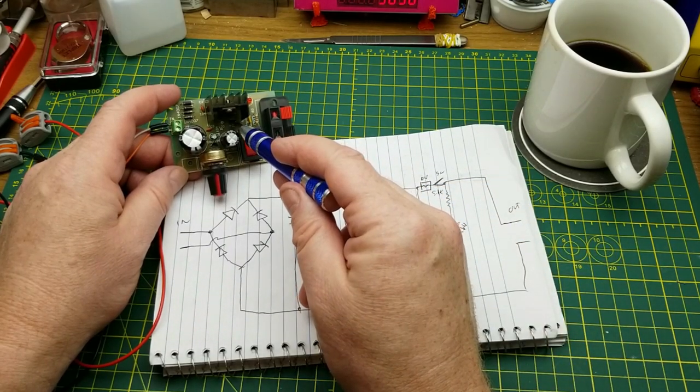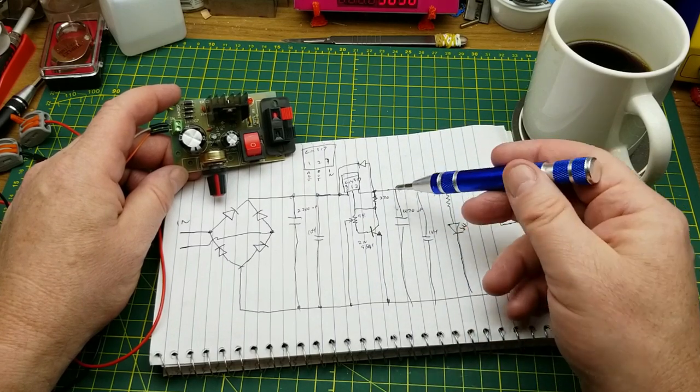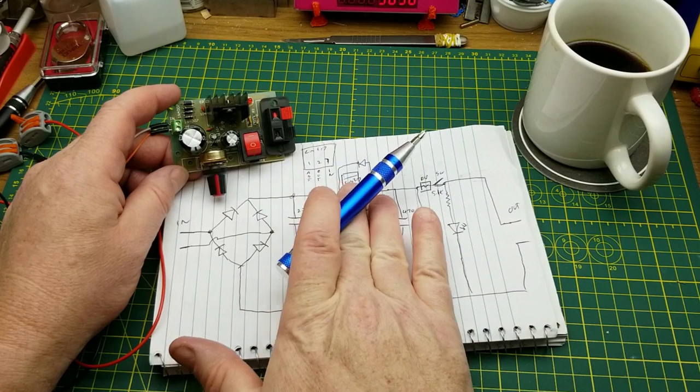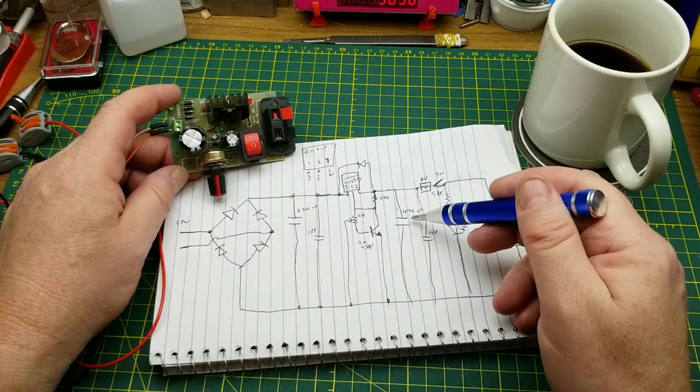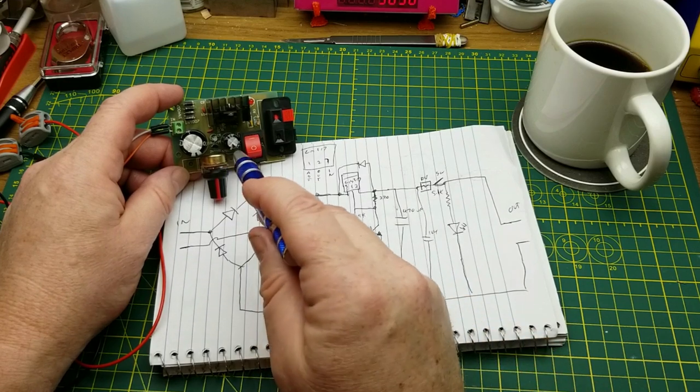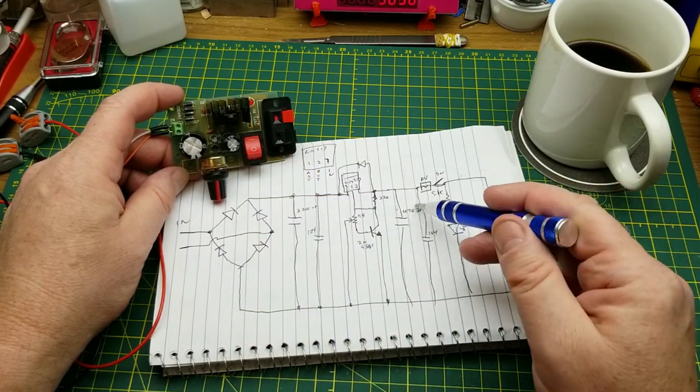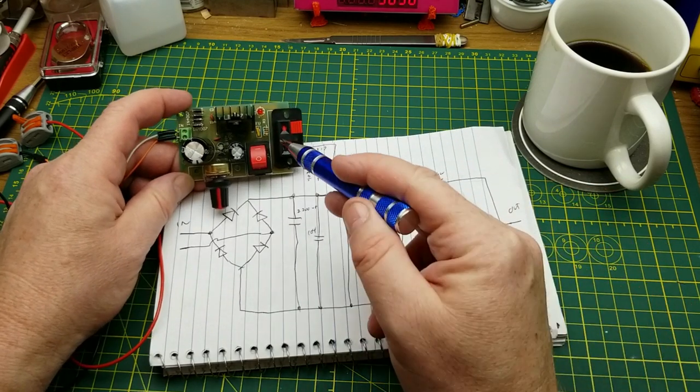On the output side, I'm going to ignore the control stuff for a second. On the output side we've got the 470 microfarad capacitor just for more smoothing, and the 104 again down there just to keep any high frequency crud out.